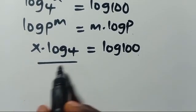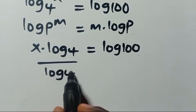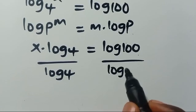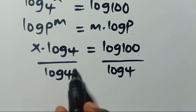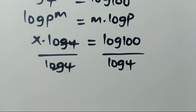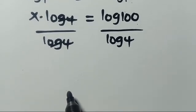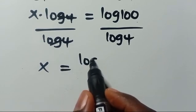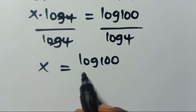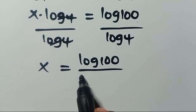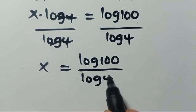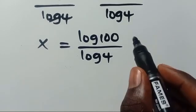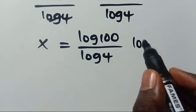So from here we have x multiplied by log 4 equals log 100. Then let's divide through by log 4 to get the value of x. This cancels out, so we have x equals log 100 divided by log 4.